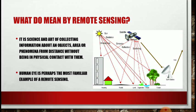What do you mean by remote sensing? It is a science and art of collecting information about an object, area, or phenomena from a distance without being in physical contact with them. It means without being in touch with an object or area or phenomena, you can get information about it.